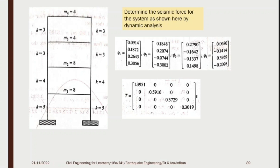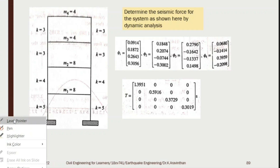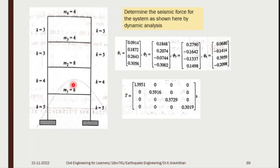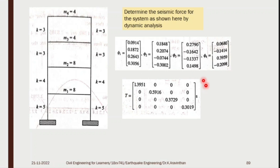All the core values are in terms of tons. One ton is 1000 kg, so you multiply by 1000 to get values in kg. The stiffness k is given here. Time period T is needed for finding the seismic coefficient.